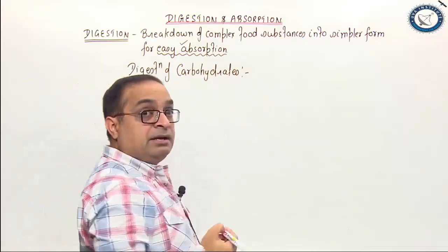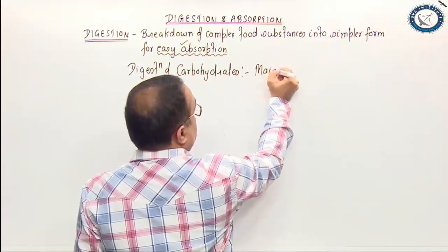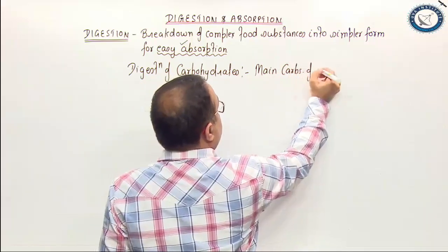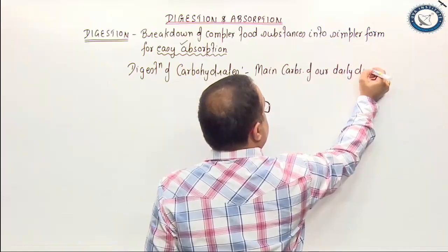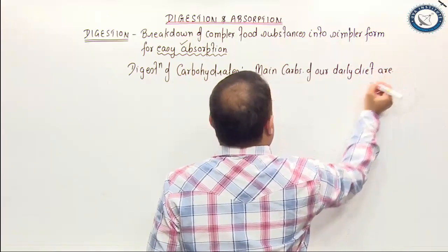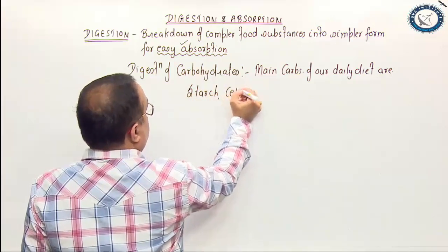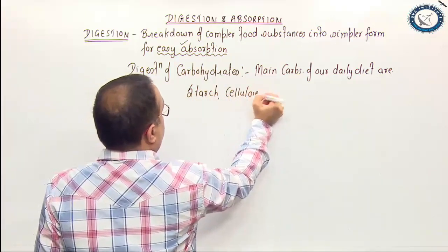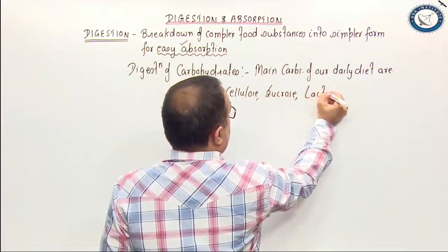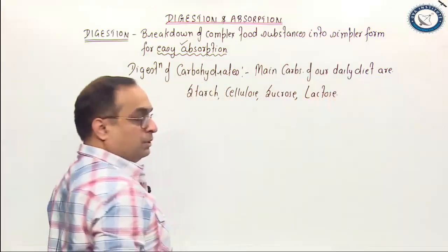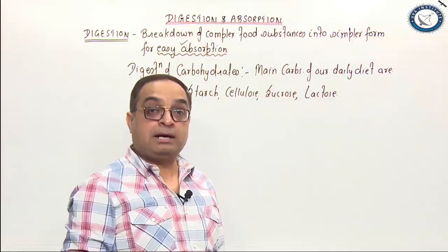The main carbohydrates of our daily diet are starch, cellulose, sucrose (table sugar), lactose (milk sugar), and if you are taking germinating seeds, that contains malt sugar — maltose.